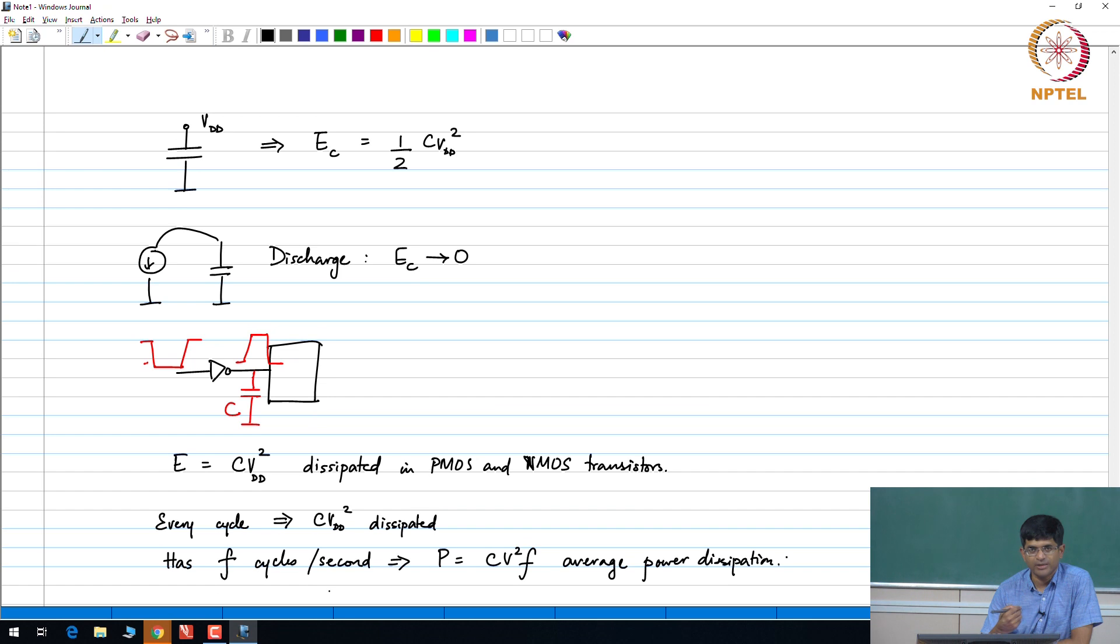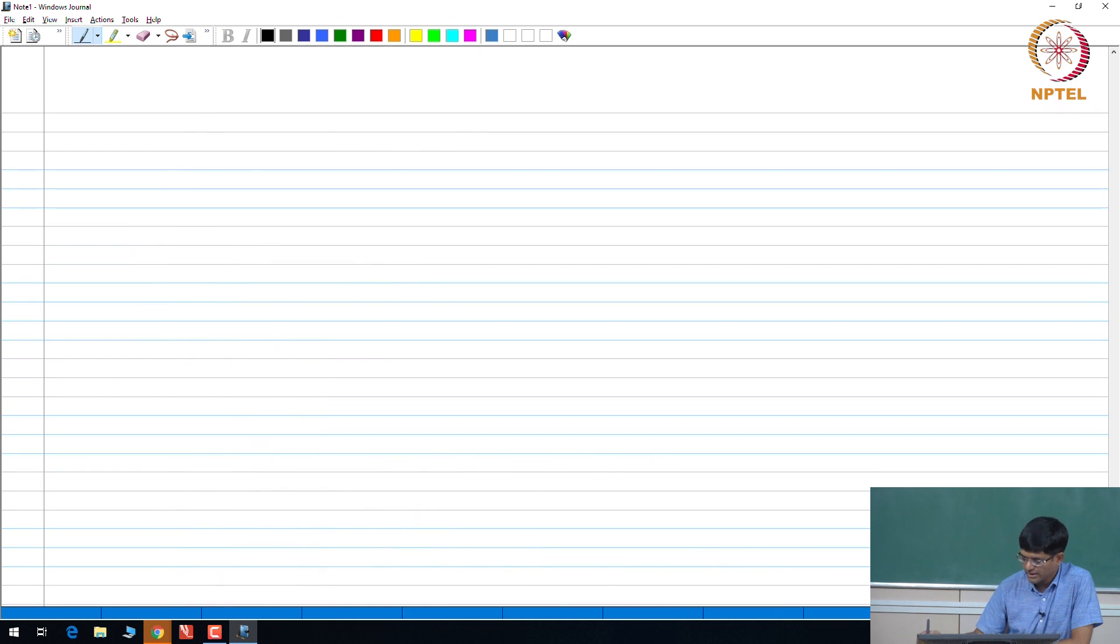I am calling this the average power dissipation, assuming that the f itself is the average number of cycles per second. The important thing to keep in mind is rather than worrying about this formula of why you have C V square f as the power dissipation, it is more important to keep track of the fact that how many times is the circuit or that gate toggling, how many times is it switching. It does not matter whether it is done over a period of 1 second or 1 day or 1 year. If it toggles some n number of times, then n into C V squared is the total amount of energy that it would dissipate. And therefore, the average power would be basically that divided by the amount of time within which that switching has occurred.